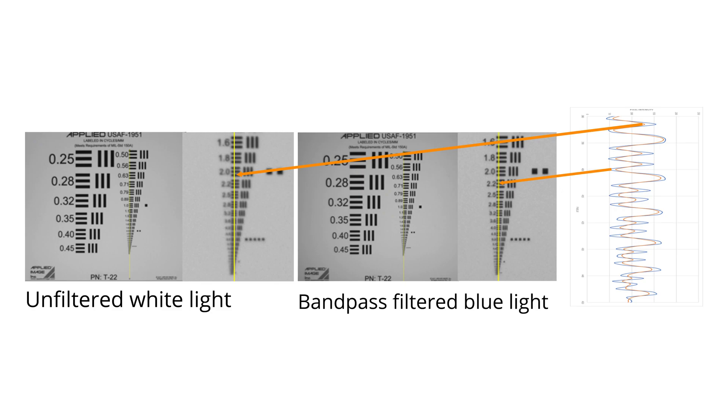This example shows the benefits of narrow band light compared to white light for contrast. The graph on the far right plots the maximum and minimum pixel values corresponding to the line profile of the vertical yellow line. The difference between the maximum and minimum values is the contrast. We want the maximum contrast along with sharp, well-defined transitions.